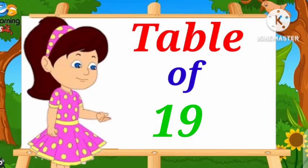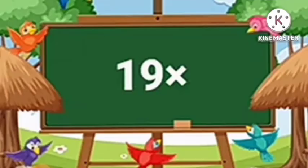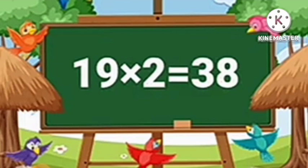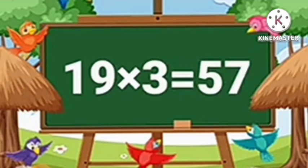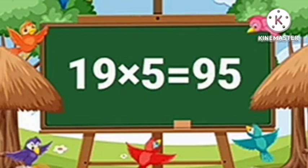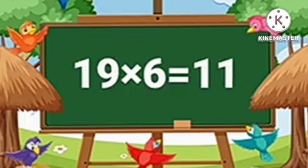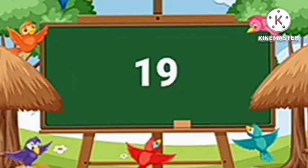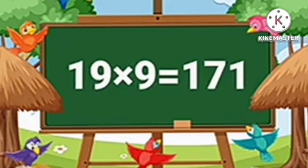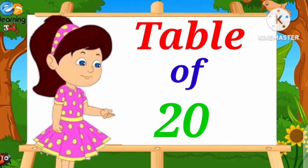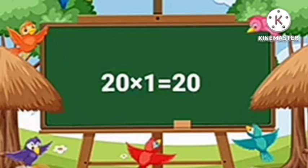Table of Nineteen. Nineteen-One's are Nineteen. Nineteen-Two's are Thirty-Eight. Nineteen-Three's are Fifty-Seven. Nineteen-Four's are Seventy-Six. Nineteen-Five's are Ninety-Five. Nineteen-Six's are One Hundred and Fourteen. Nineteen-Seven's are One Hundred and Thirty-Three. Nineteen-Eight's are One Hundred and Fifty-Two. Nineteen-Nine's are One Hundred and Seventy-One. Nineteen-Ten's are One Hundred and Ninety.